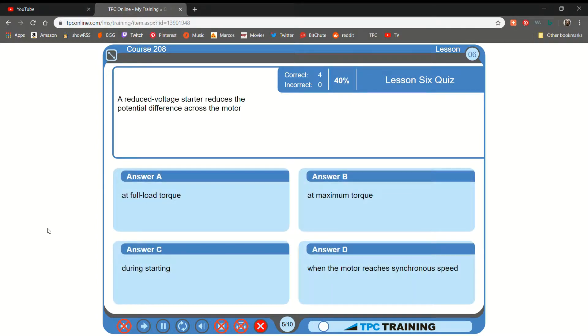A reduced voltage starter reduces the potential difference across the motor. A. At full load torque. B. At maximum torque. C. During starting. D. When the motor reaches... That is correct.